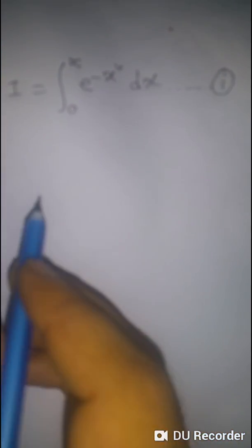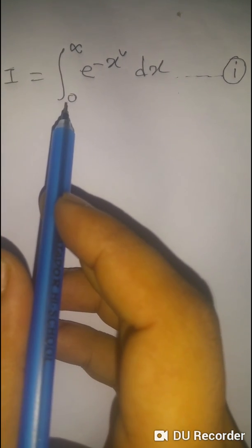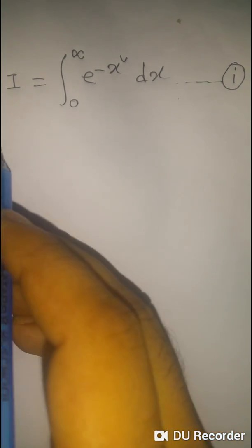Today I will show you how to solve the integration of e to the power negative x squared dx from 0 to infinity using the gamma function.